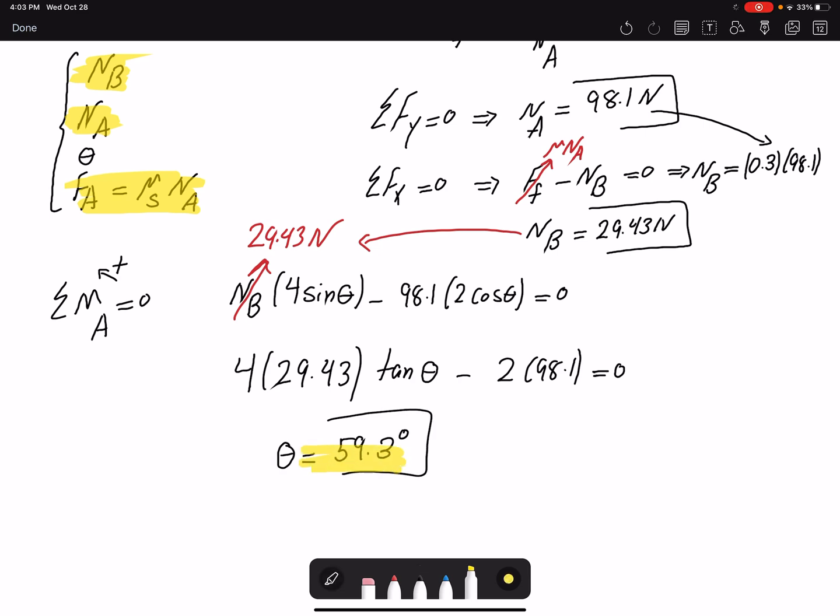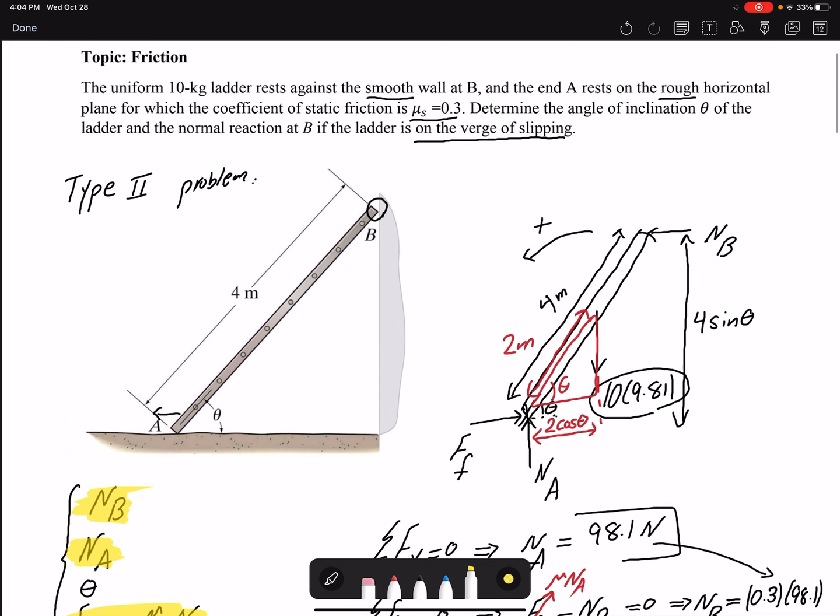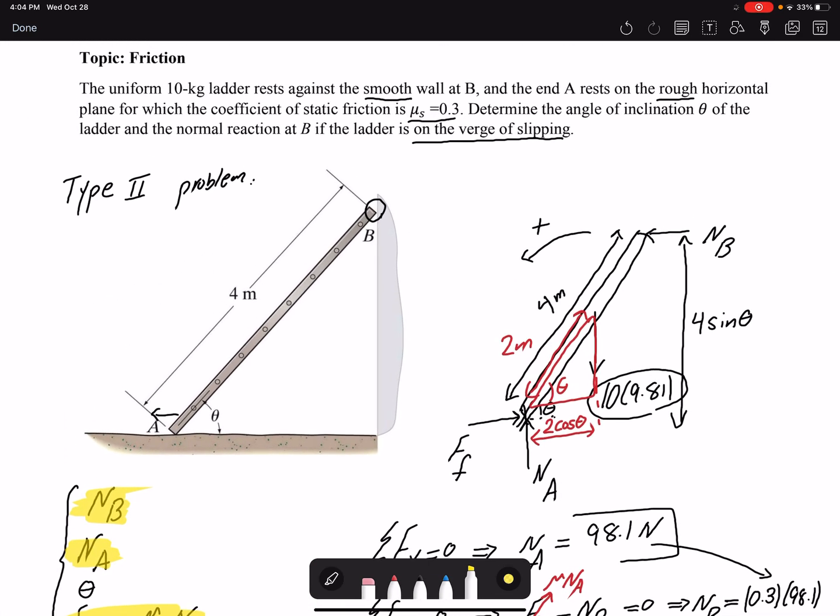And that would be my other unknown. So that was a type 2 problem because I knew the surface was on the verge of slipping.